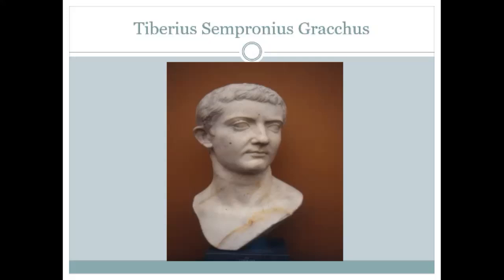Gracchus was aware of the problem afflicting the Italian countryside: the decline of the small holder in the Roman countryside and his replacement by large estates — latifundia — owned by rich senators and equestrians who employed gangs of slaves to work the land. Gracchus determined to fix this problem, and when he became tribune of the plebs in 133 BC, he proposed a land reform bill.